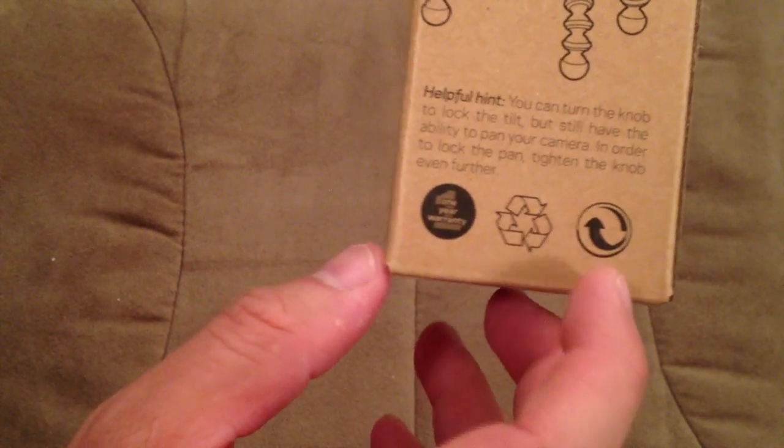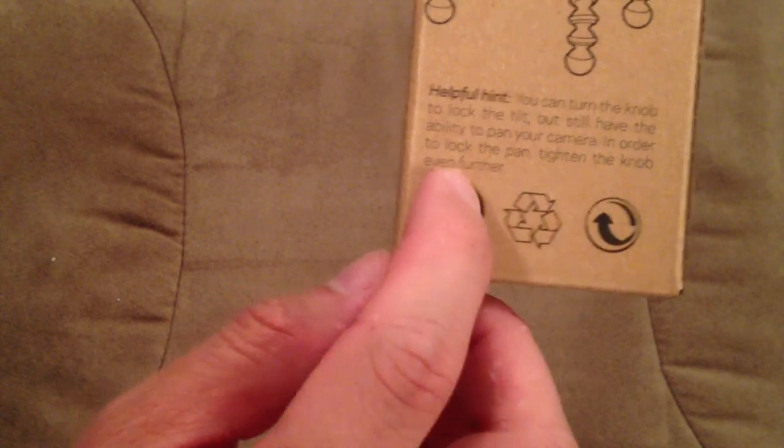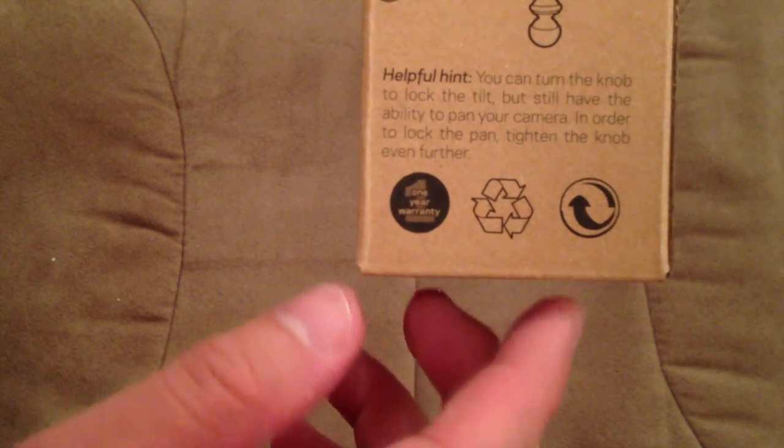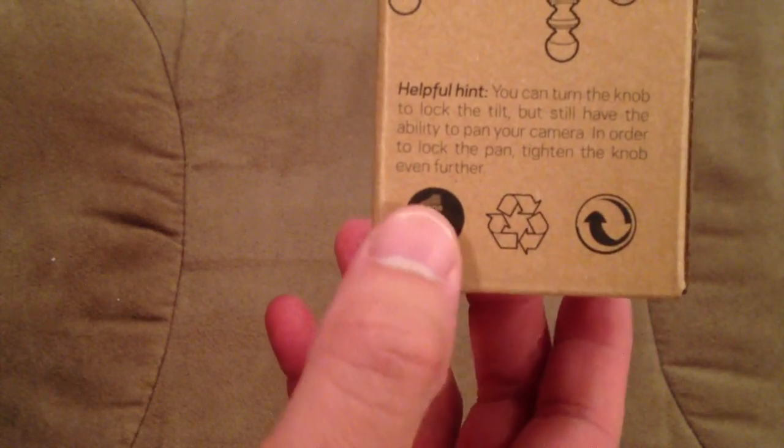It says you can turn the knob to lock the tilt, but still have the ability to pan your camera. In order to lock the pan, tighten the knob even further.